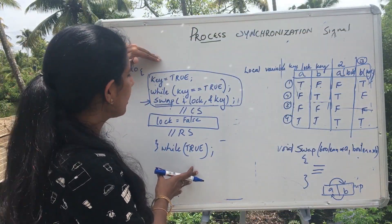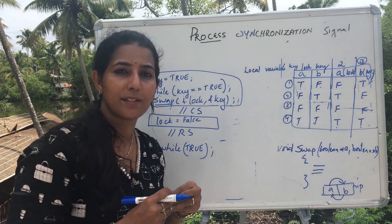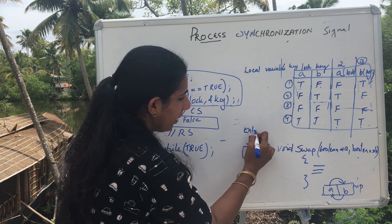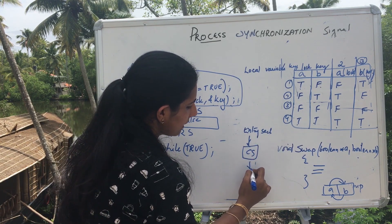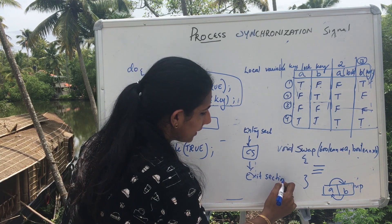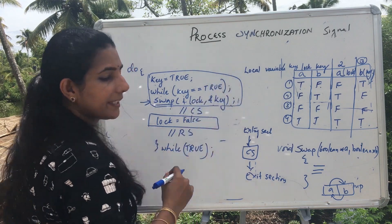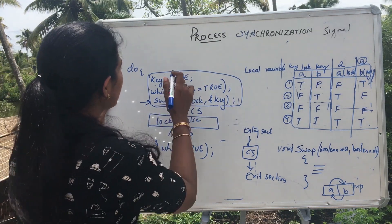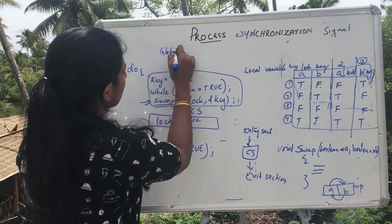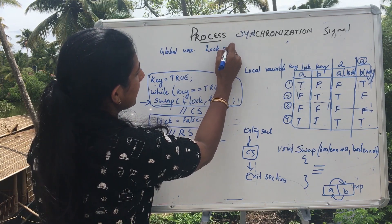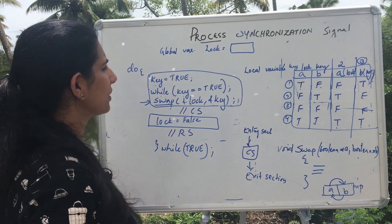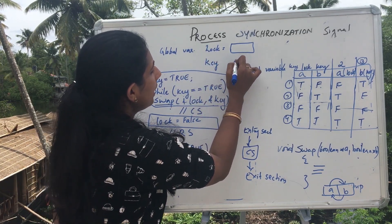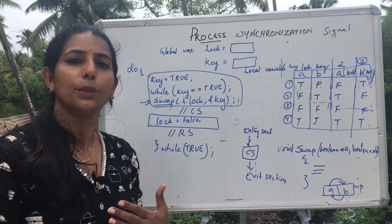This is the implementation code for entering the critical section that any particular process must execute. In order to enter the critical section, a process must have an entry section code — acquiring the lock — then enter the critical section, and then perform the exit section code. In this code, the entry section acquires the lock and the exit section releases it. There is a global variable lock, which is visible to all processes competing for the critical section. It is a Boolean variable. Every process also has its own local variable key, which is also Boolean.